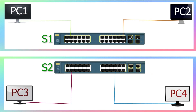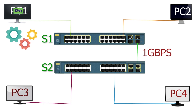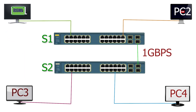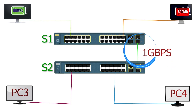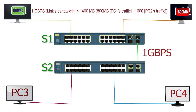This network has two LAN segments. Both segments have connectivity through a single 1GB per second link. PC1 generates 800MB of traffic for PC3, and PC2 generates 600MB of traffic for PC4. Both use the same link to reach their destinations. The link's bandwidth is 1GB per second, which is less than the total traffic sent by both PCs.